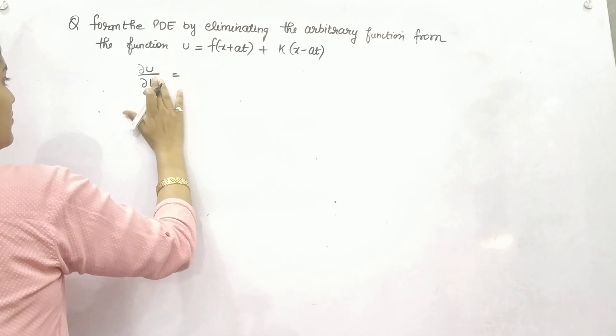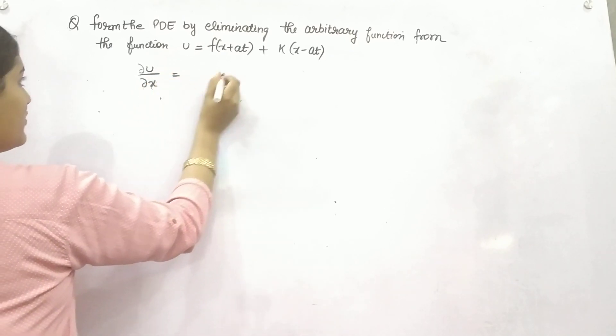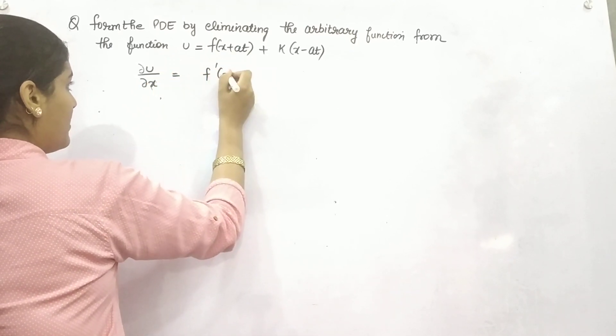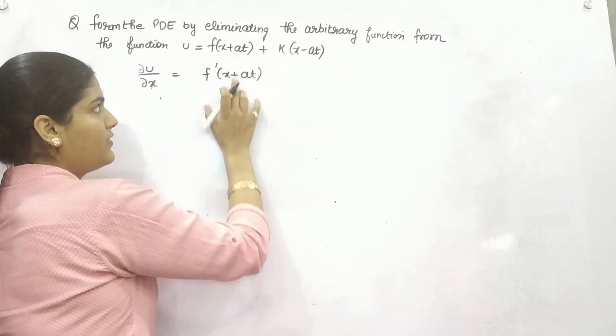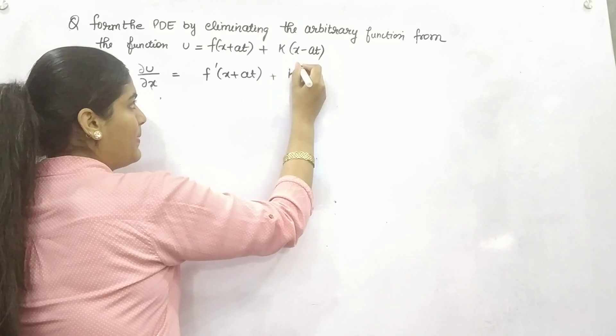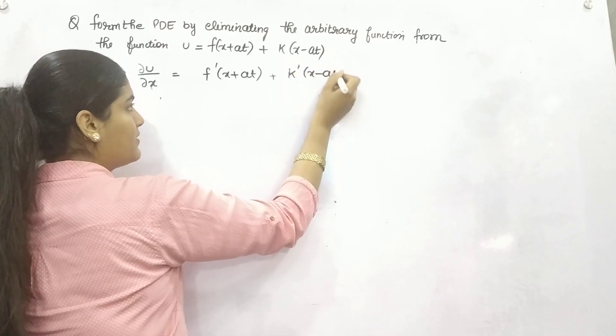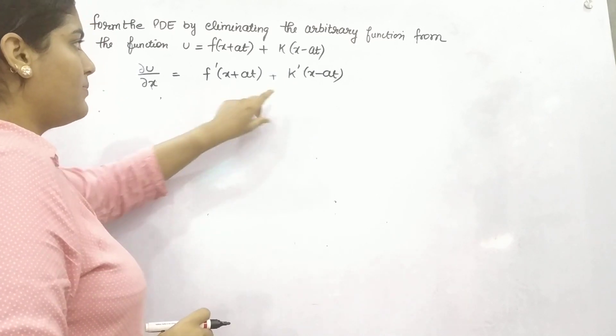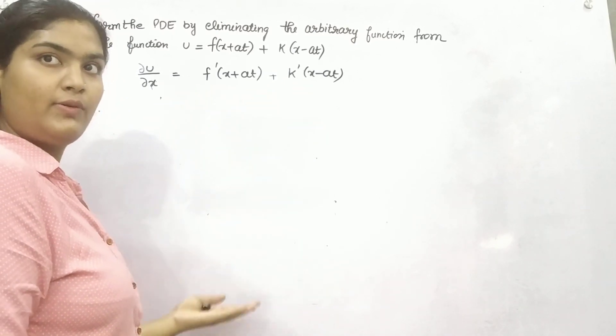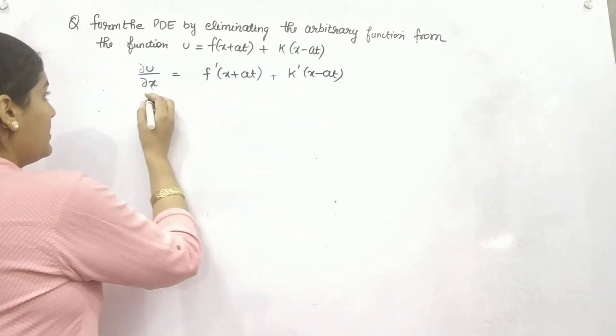So if you are doing with respect to x, what it would be? f prime of partial differentiation of this function plus partial differentiation of this function. And the coefficient, because coefficient of x is 1, so it will be 1 only.